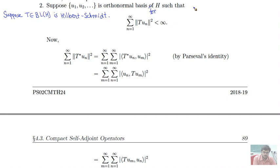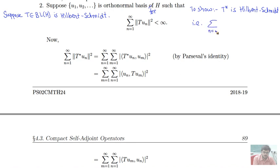What we have to show is that T*, the adjoint of T, is Hilbert-Schmidt. We have already taken an orthonormal basis, so we need to show that the series — summation n equals 1 to infinity of the norm of T*(uₙ) squared — is convergent. If we show this, we have shown that T* is Hilbert-Schmidt.